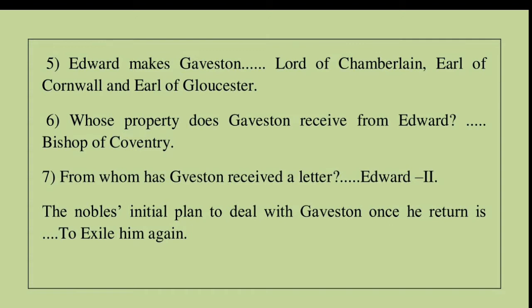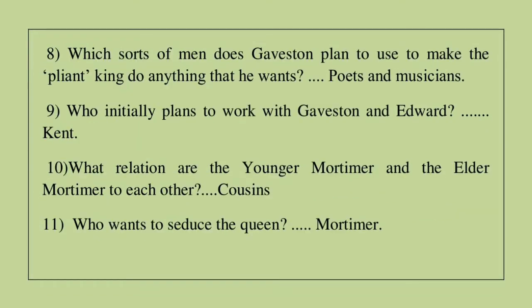Question 7: From whom has Gaveston received a letter? The answer is Edward II. Question 7 (follow-up): The nobles' initial plan to deal with Gaveston once he returns is to exile him again. Question 8: Which sorts of men does Gaveston plan to use to make the pliant king do anything he wants? The answer is poets and musicians.